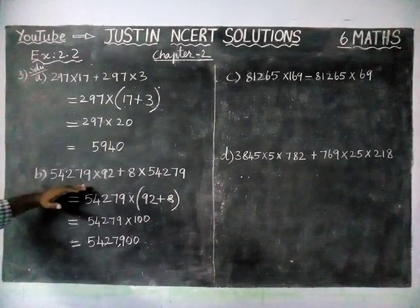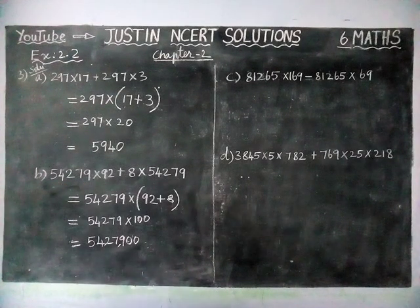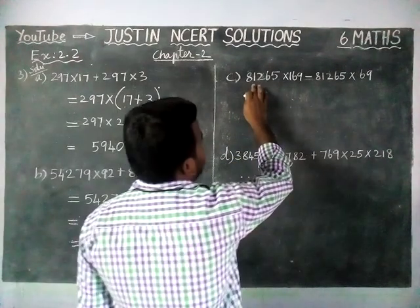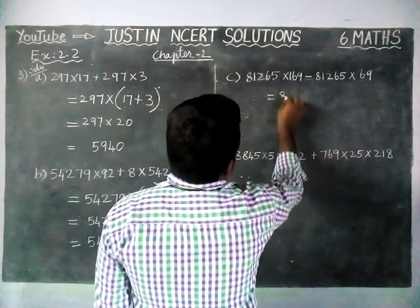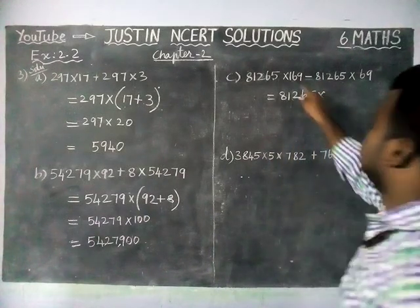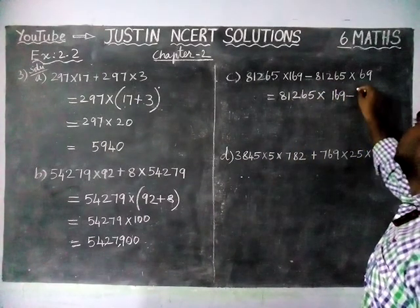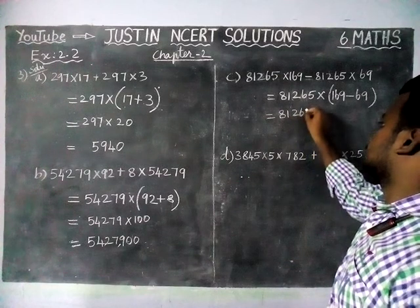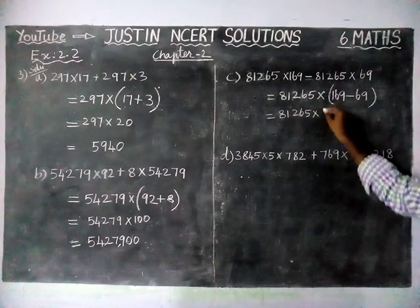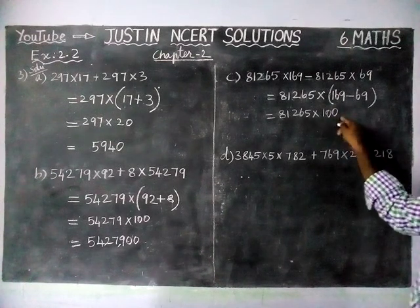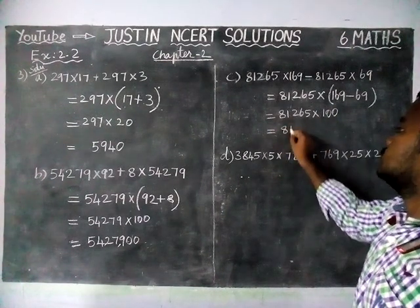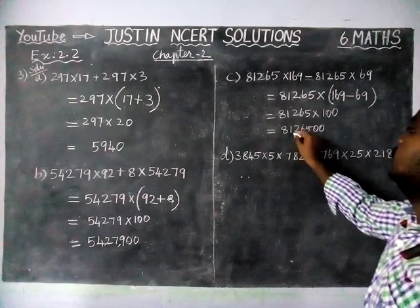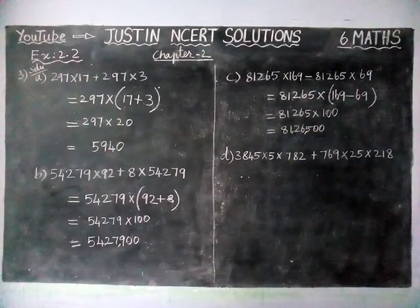Here also, we used the same distributive property of multiplication over addition. And now we are going to use the distributive property over subtraction. Here, the number 81,265 is common. So, 81,265 into (169 minus 69) equals 81,265 into 100. We have two zeros in the last, so multiplying: 1 into 81,265 with two zeros gives 81,26,500 as the answer for option C.